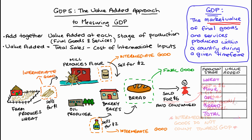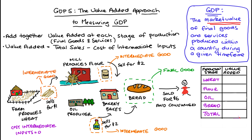I'll make a table here for our example to find the value added. In the rows I have the different stages of production of our loaf of bread. We need to think about the cost of any intermediate inputs in order to calculate value added. The farm had zero cost of intermediate inputs for the wheat that they produce — intermediate inputs just means the costs of any other goods or services used to produce a good or service. So the farm has zero of those, which means value added — the difference between total sales of $1 minus the cost of intermediate inputs of zero — equals one.